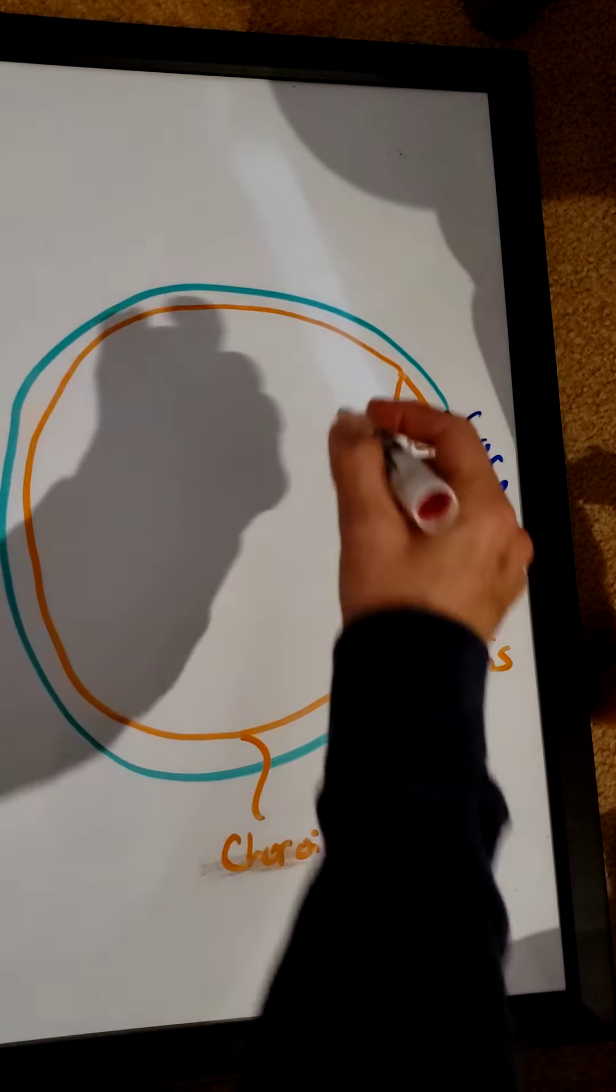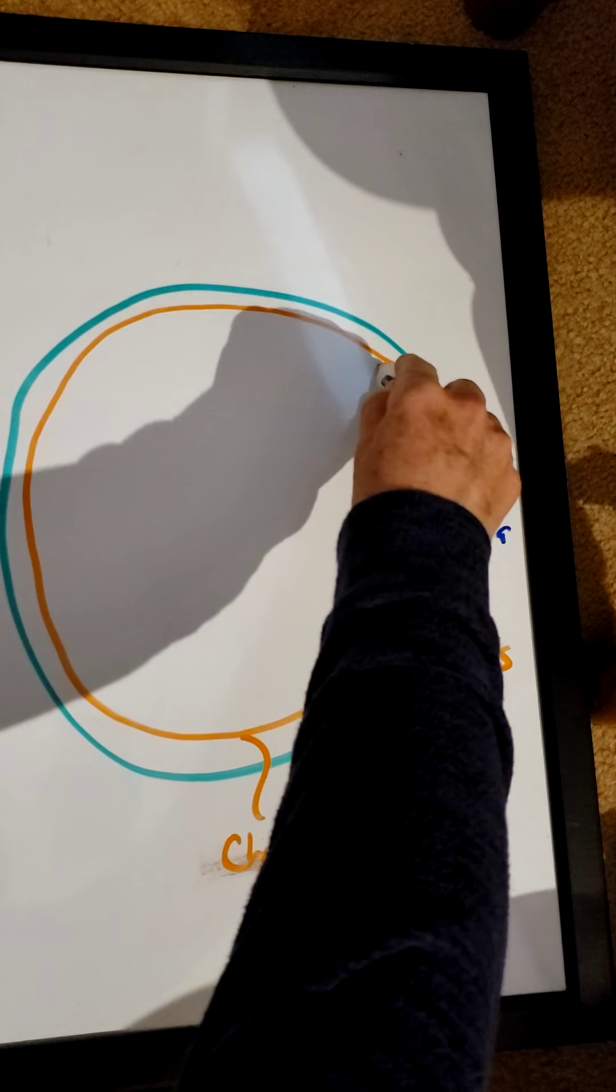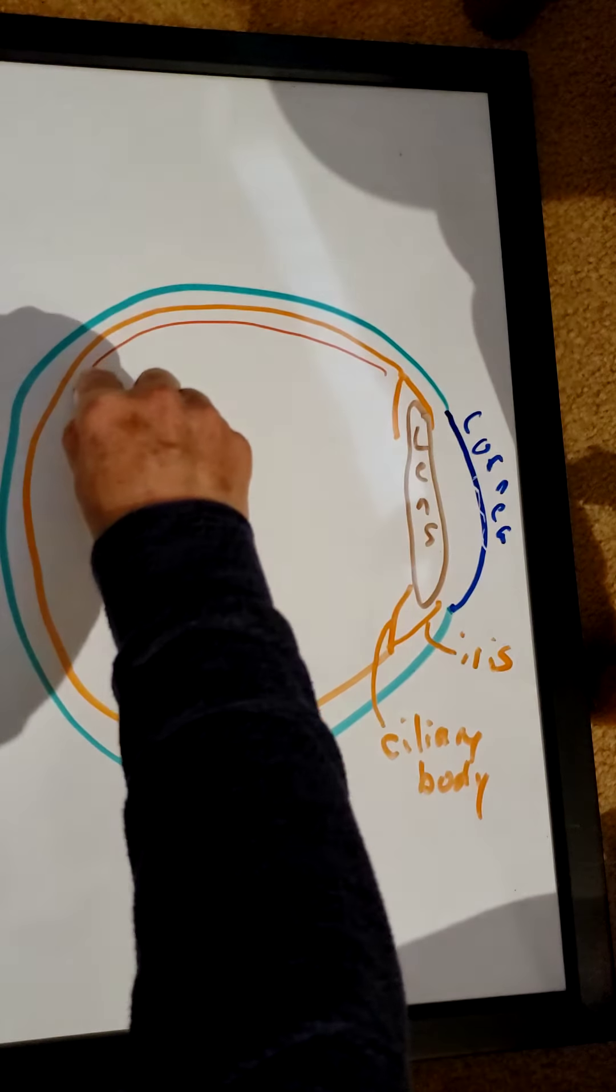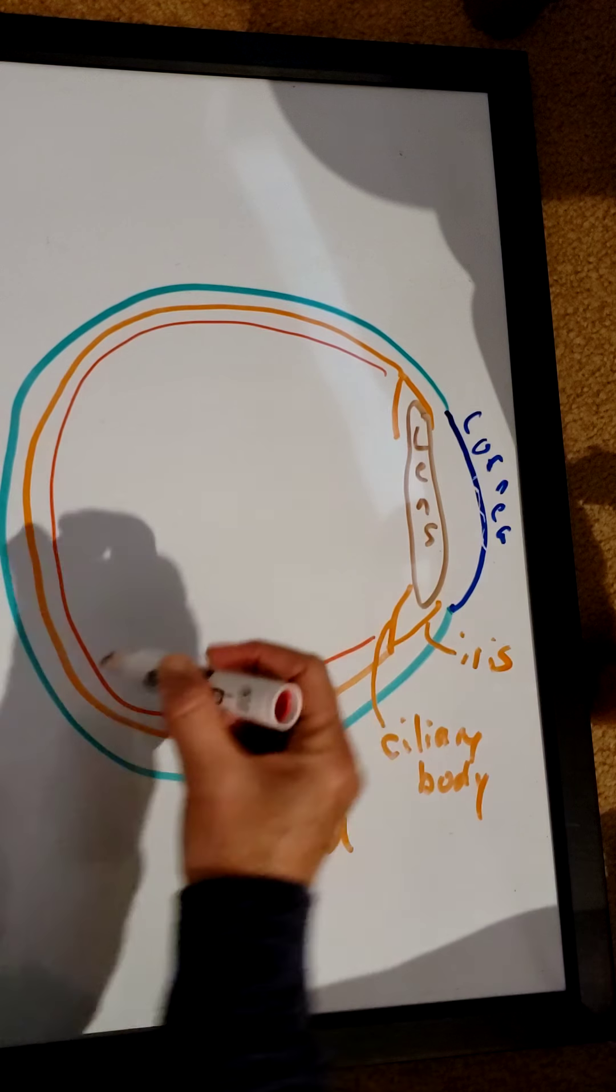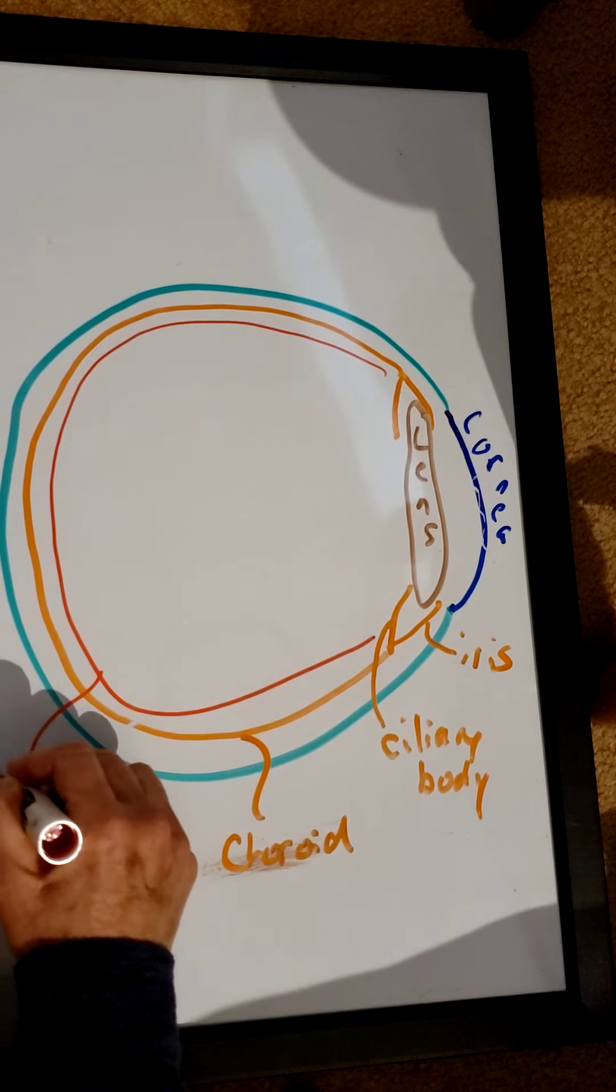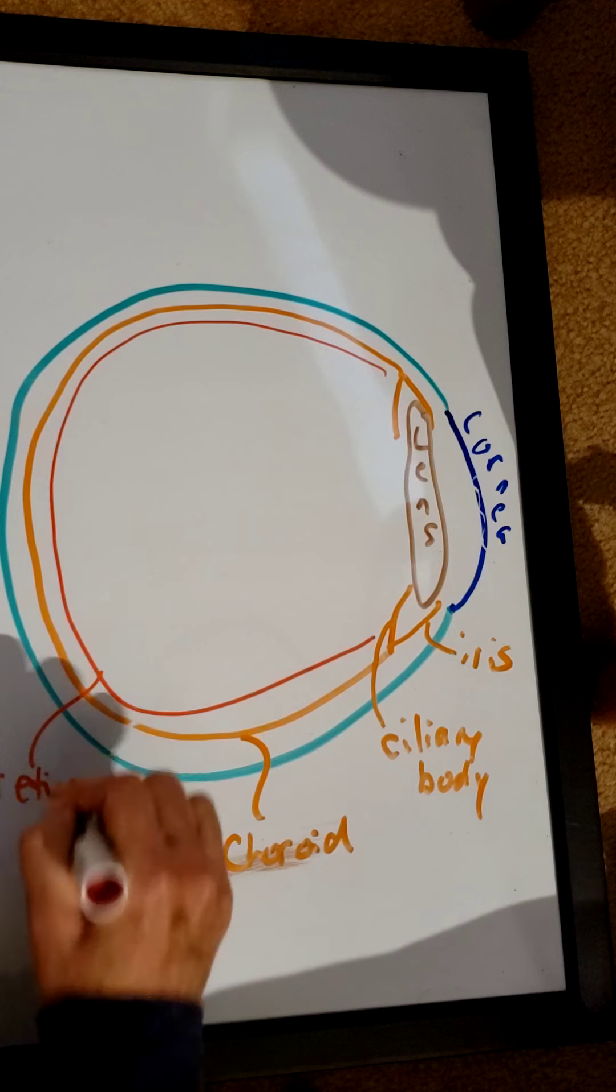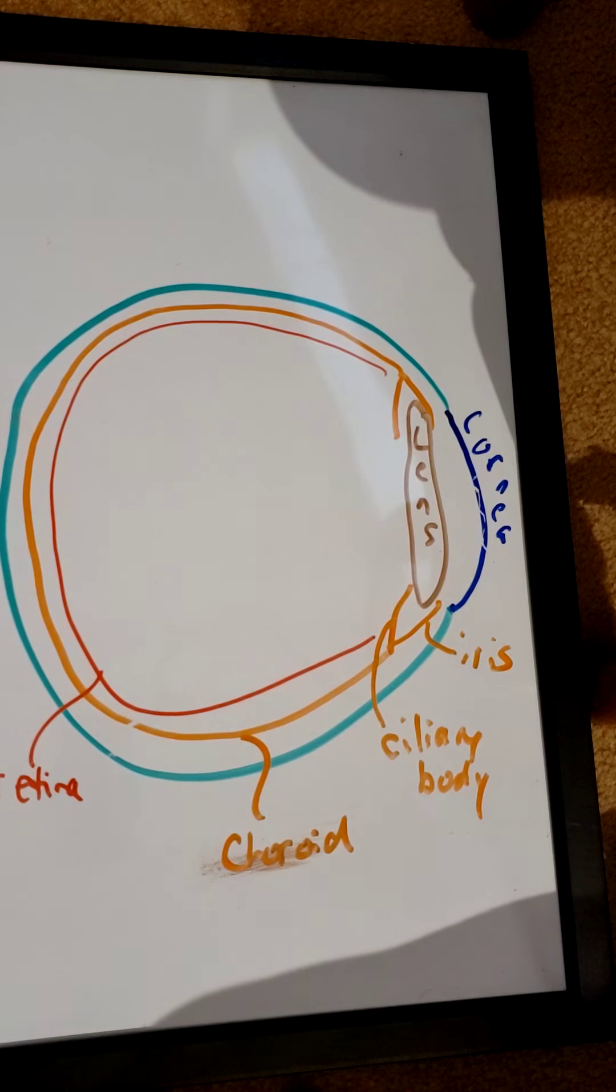The most deep layer of the eyeball is the retina. The retina is the business part of the eye. It's the part that allows you to actually see.